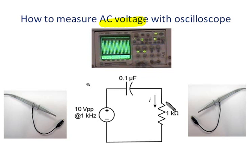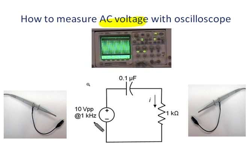Let's look at this simple circuit. The AC power supply generates 10 volts peak-to-peak at 1 kHz sinusoid. So the peak value should be 10 divided by 2, that is 5 volts peak. The frequency is 1 kHz.